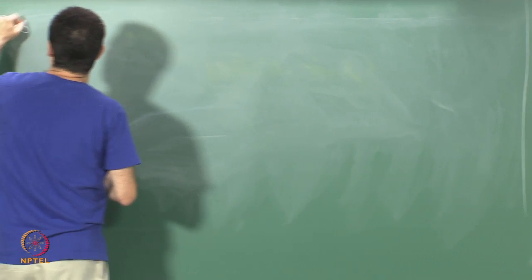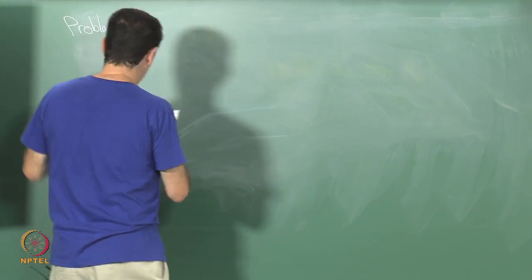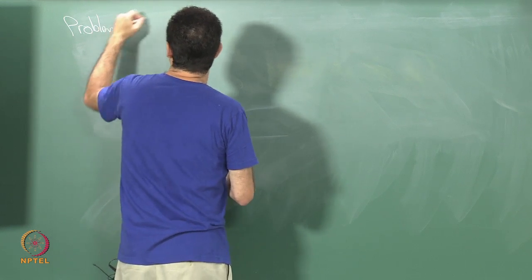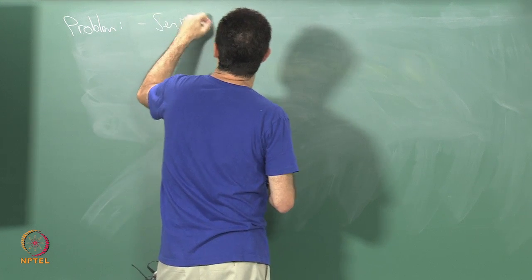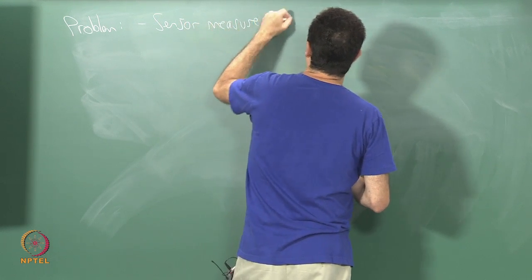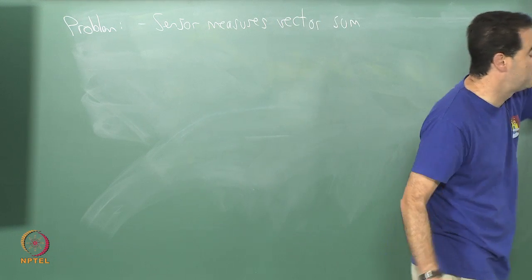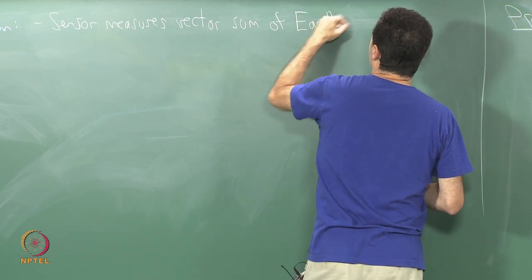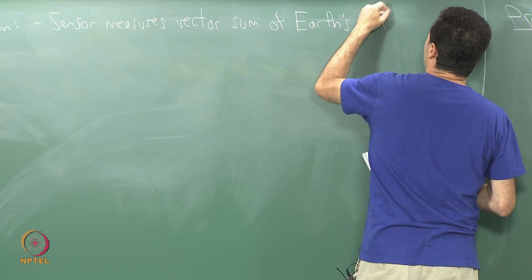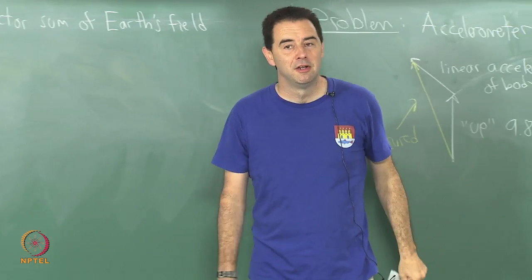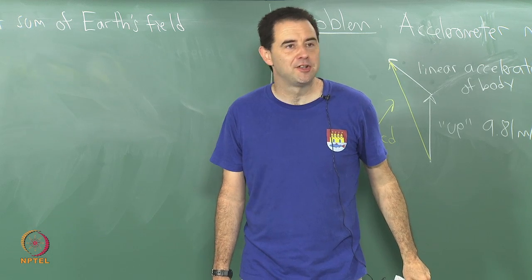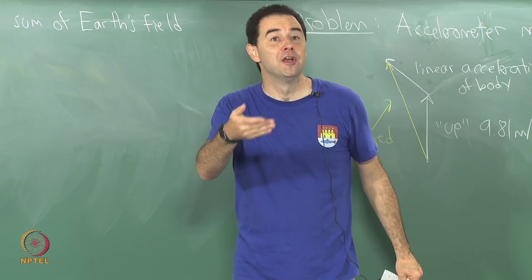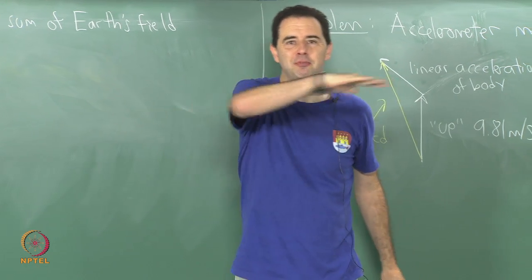So, the problem with such an approach is that the magnetometer measures the vector sum, just like this vector sum, but is a vector sum of the earth's field. That is the part that we are normally interested in. The simplest assumption is that perhaps the magnetic field of the earth is always arranged in such a way that the vector field lines just point north, right.